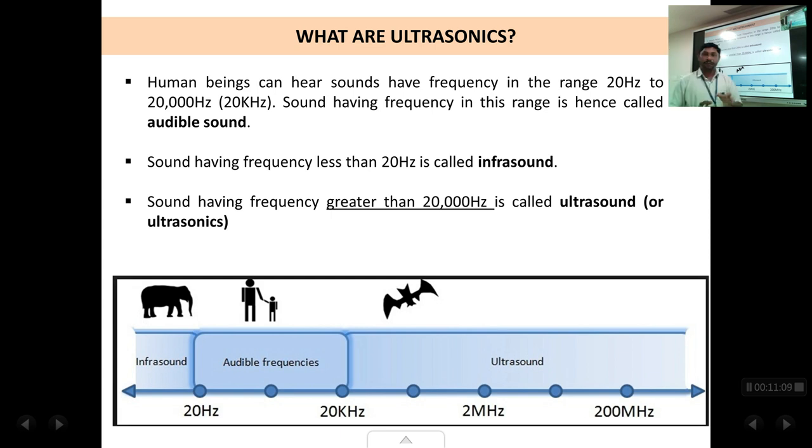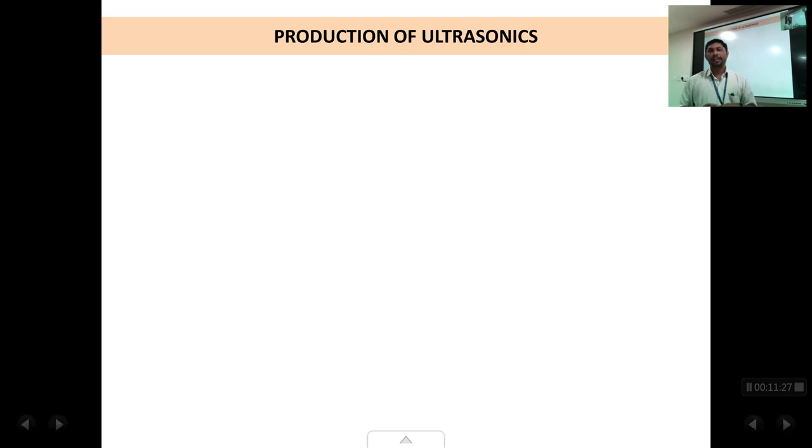So the important definition to remember: ultrasonics are sound waves which have a frequency greater than 20,000 hertz. Now we are going to start with the important part — the production of ultrasonic waves. We are going to see two methods of producing ultrasonic waves in this chapter: the magnetostriction method and the piezoelectric method. These two methods will be covered in detail in the next class.